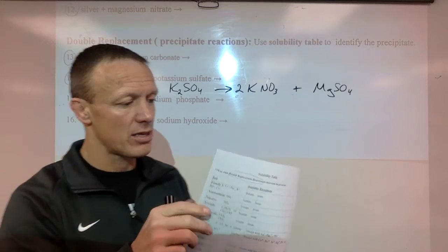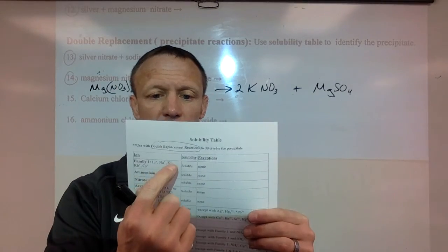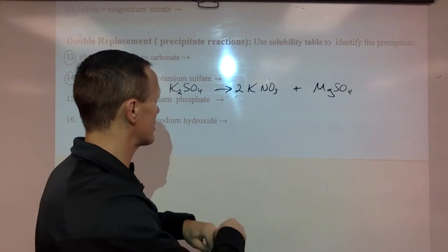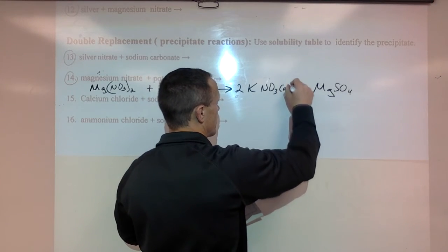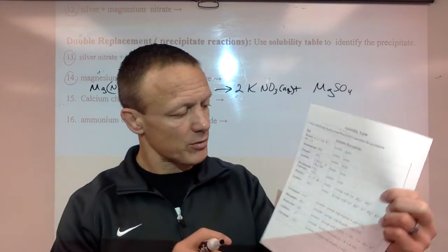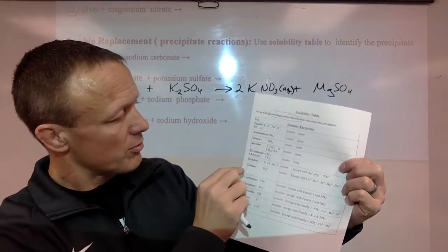Well, KNO3, anything with K in it is always soluble. So that will not be precipitate. It will be dissolved. So this is aqueous. This is aqueous. It will be dissolved. Sulfate. Magnesium sulfate. So down here, sulfates.